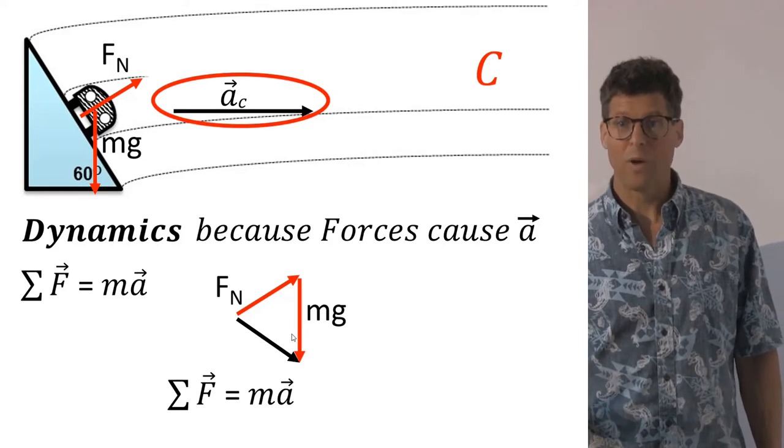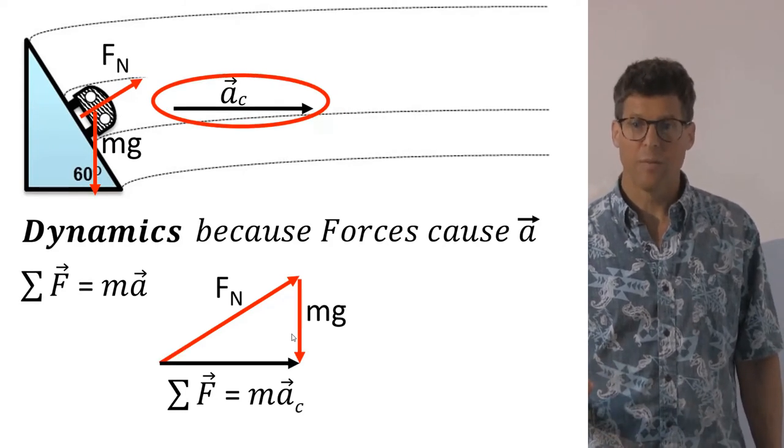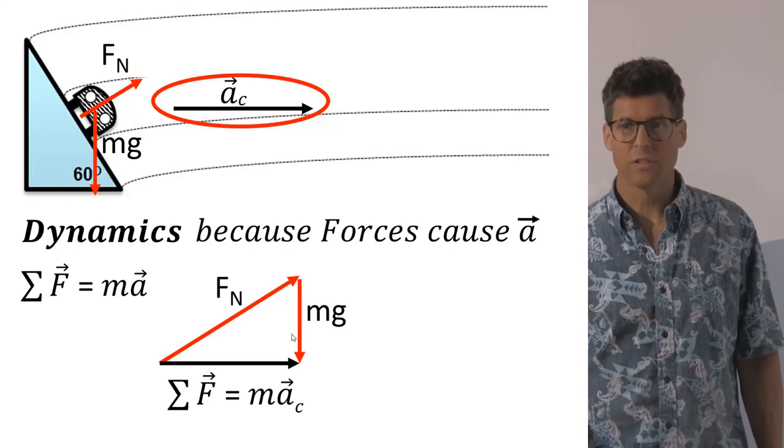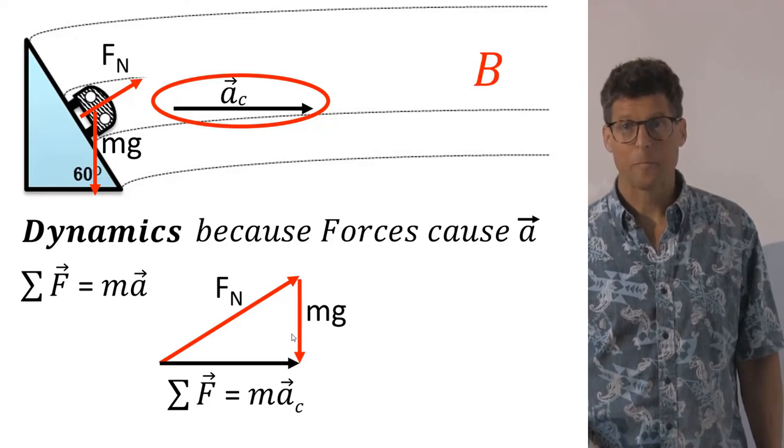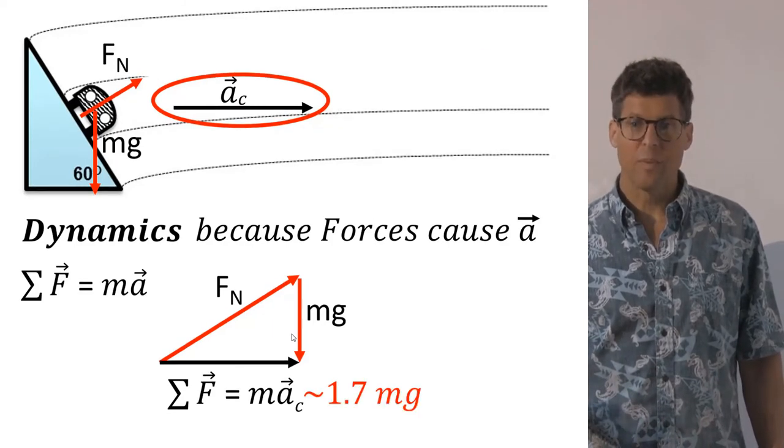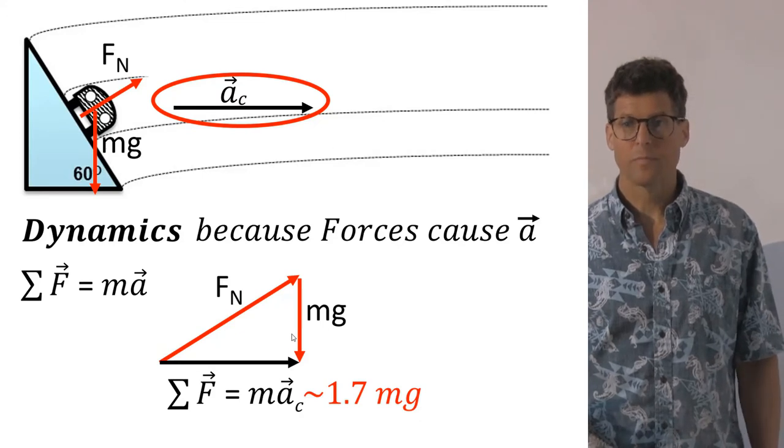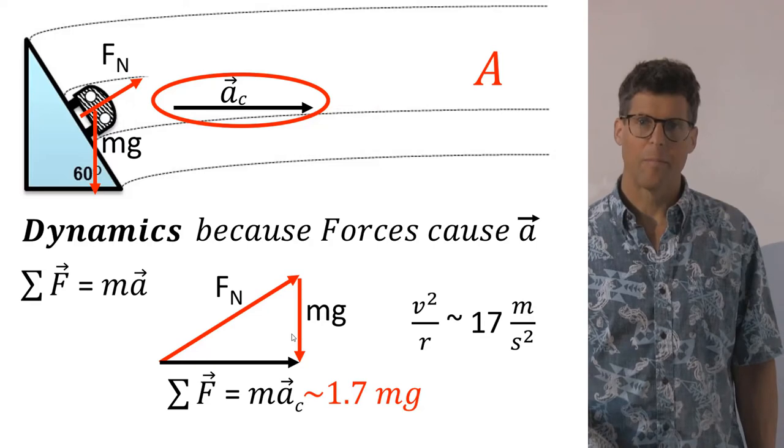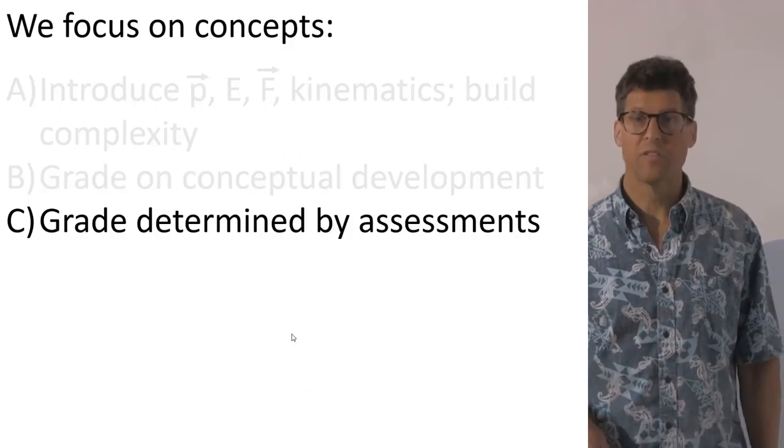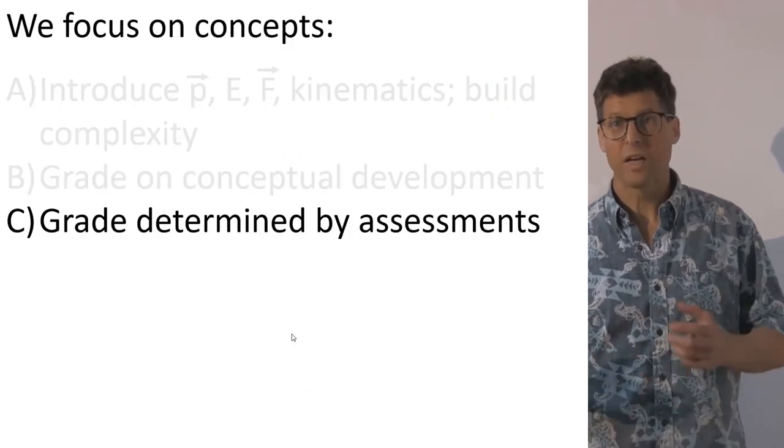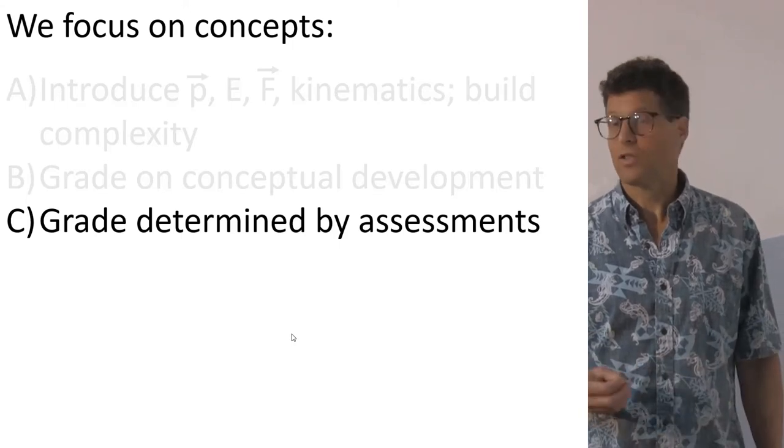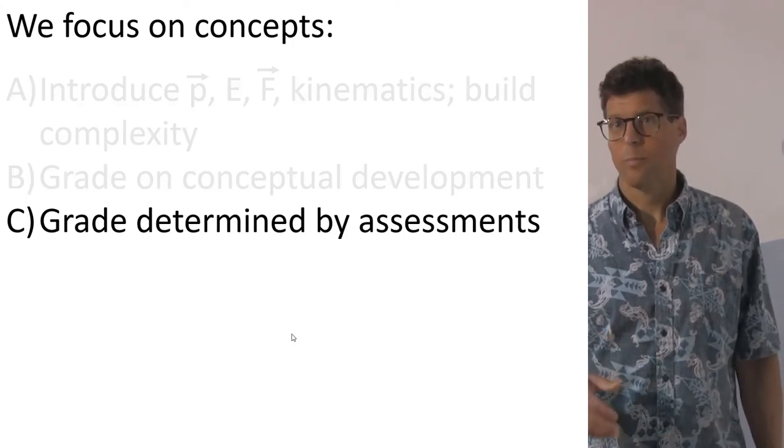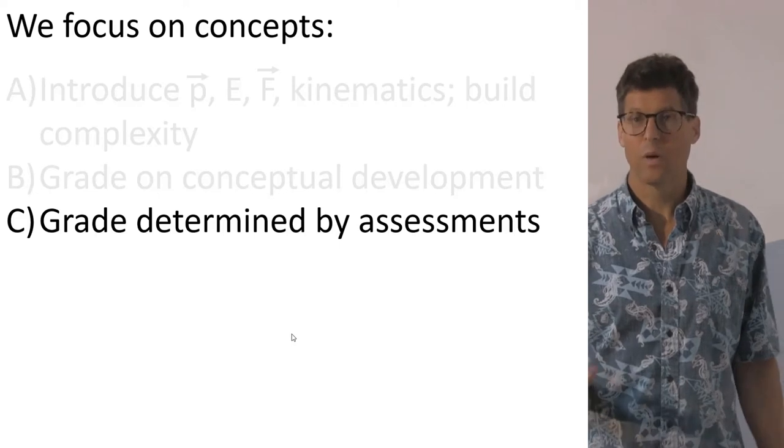But if they furthermore recognized the acceleration must be in the same direction as the sum of the forces, they would get a B. Lastly, if they were able to estimate what the sum of the forces were and substituting the right values to get the correct answer, they would get an A. We have constant feedback with short weekly assessments that allow students to check on their progress and allow us to grade the assessments before the next class period, providing quick feedback.